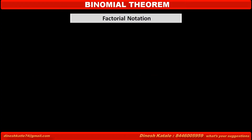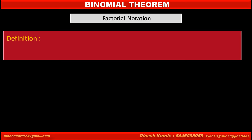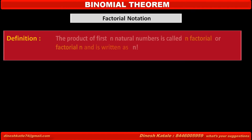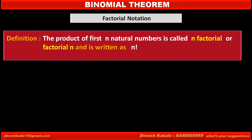Now we have to learn about factorial notation. The product of first n natural numbers is called n factorial, or factorial n, and is written as n with an exclamation mark — n!